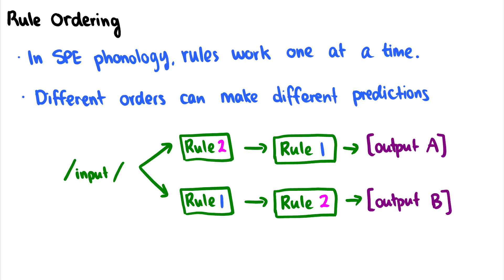What this means is that different orders can make different predictions. If we have some input and it goes through rule 1 first and then rule 2, it will have some output. But if we take that same input and do rule 2 first and then rule 1 after, we may get a different output. I'm going to introduce some rules and show that the ordering of the rules can change our predictions.